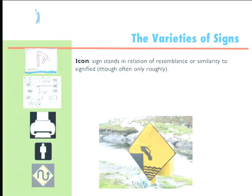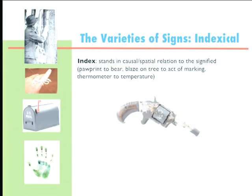Circuit diagrams are very complicated in this way — they involve all three kinds of signs. But a certain amount is iconic in the sense that where the wires go is iconically represented by the diagram. Indexicals, as I said, involve a causal relationship or a spatial-temporal relationship between the marker and the sign and the thing signified.